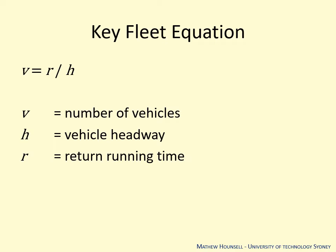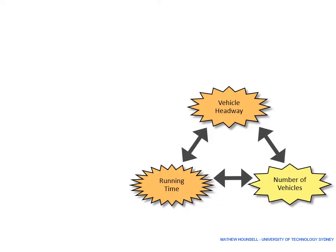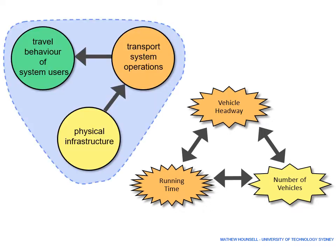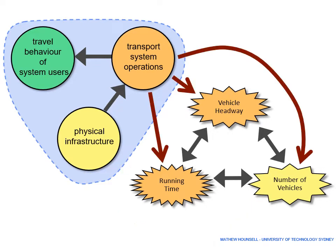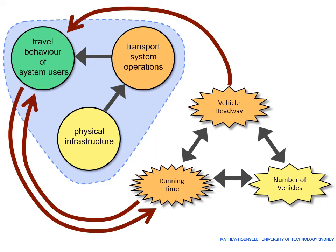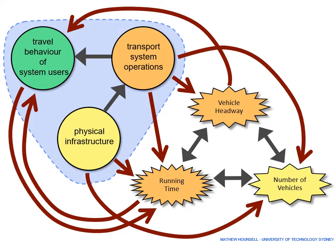The key fleet equation for public transport is that the number of vehicles equals the return running time divided by the headway. From this, we know that vehicle headway, running time, and number of vehicles are interrelated. Physical infrastructure controls running times and can limit the number of usable vehicles. Operations controls running time, vehicle headway, and number of vehicles. Travel behaviour is governed by both vehicle headway and running time, and user behaviour can influence running time through things such as dwell times. Together, these show that transport, land use, and operations are all interrelated.